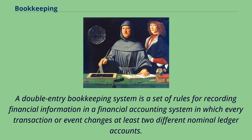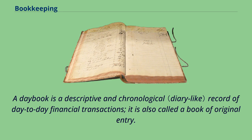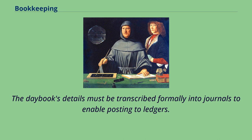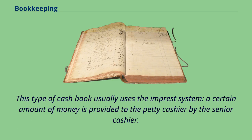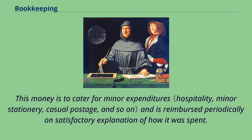A double-entry bookkeeping system is a set of rules for recording financial information in a financial accounting system in which every transaction or event changes at least two different nominal ledger accounts. A day book is a descriptive and chronological record of day-to-day financial transactions, also called a book of original entry. The day book's details must be transcribed formally into journals to enable posting to ledgers. Day books include the petty cash book, which is a record of small-value purchases before they are later transferred to the ledger and final accounts. It is maintained by a petty or junior cashier, and usually uses the imprest system. A certain amount of money is provided to the petty cashier by the senior cashier, to cater for minor expenditures, and is reimbursed periodically on satisfactory explanation of how it was spent.